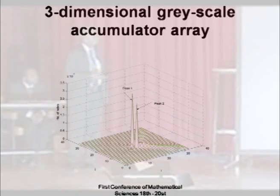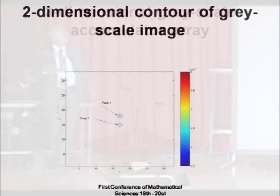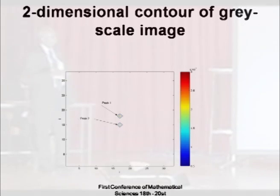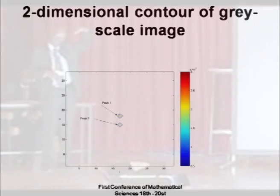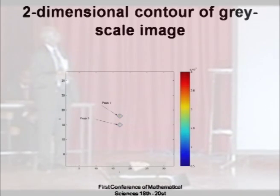That was the result. The contour plot simply shows us those two peaks from above, giving us a clearer view of where each process peak is located.